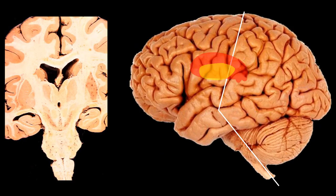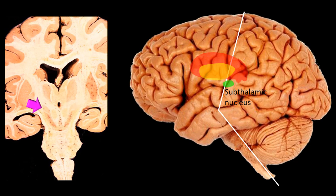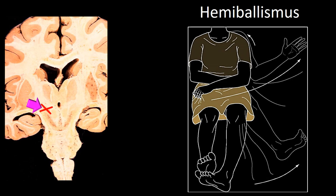The second basal ganglionic structure is the subthalamic nucleus, represented as a green oval in the uncut specimen and indicated by arrow in the cut specimen. The thalamus is above it, hence the name subthalamic nucleus. Injury to this nucleus produces contralateral hemiballism.